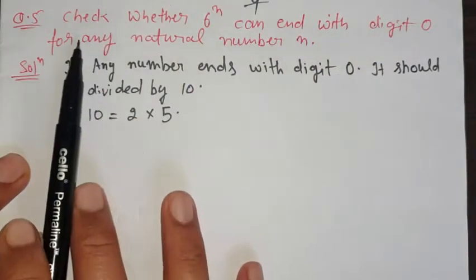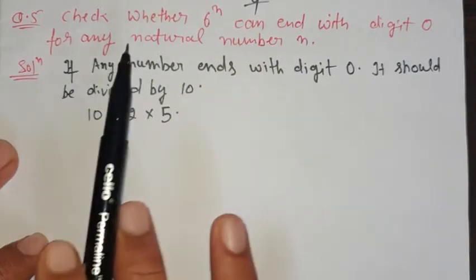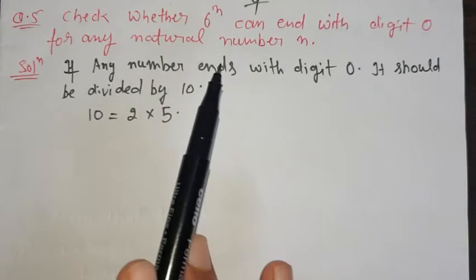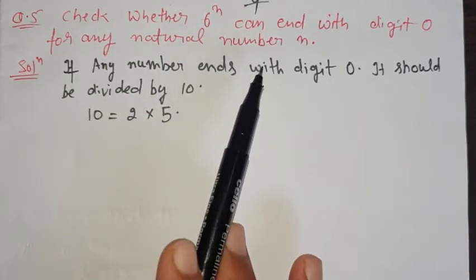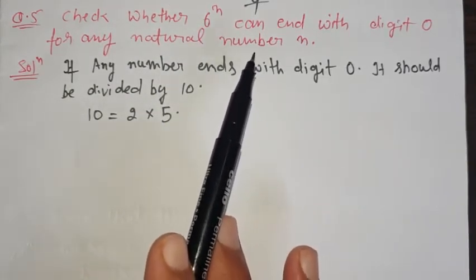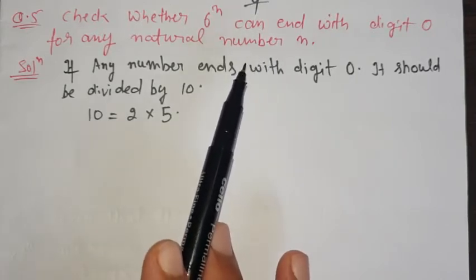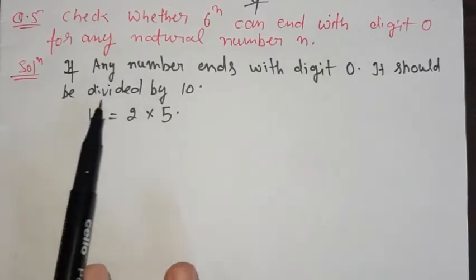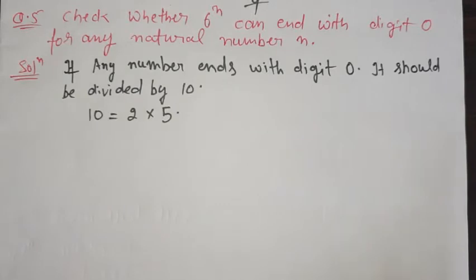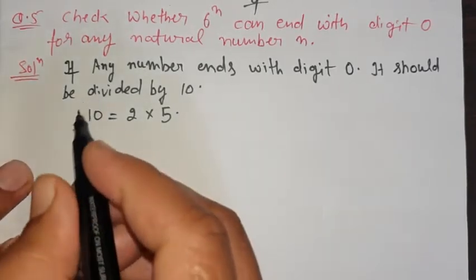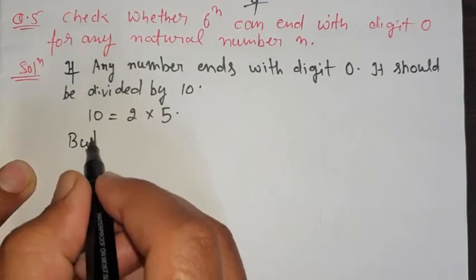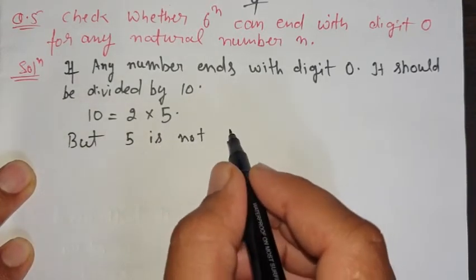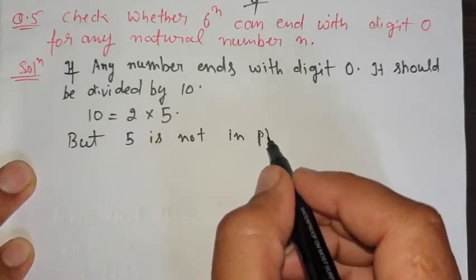Question 5: Check whether 6 raised to the power n can end with the digit 0 for any natural number n. We will check if 6^n can have unit digit 0. For that, the condition is: if the unit digit is 0, it should be divisible by 10, and the factors of 10 are 2 × 5. But clearly, 5 is not a prime factor of 6.